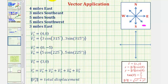For the third part of the walk, modeled using vector v₃, the person walks five miles south. We should recognize that the x component would be zero and the y component would be negative five.